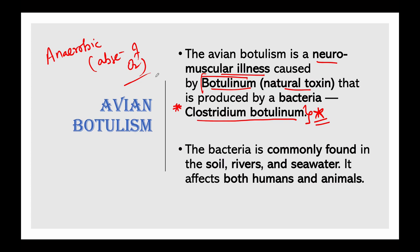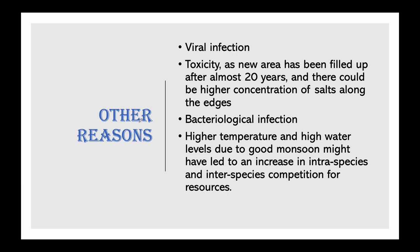This bacteria affects the nervous system of birds, leading to paralysis of their legs and wings. Outbreaks of avian botulism tend to occur when average temperatures are above 21 degrees Celsius or during droughts. The Rajasthan government, following a division bench of the Rajasthan High Court taking cognizance, listed four likely reasons: viral infection; toxicity due to higher concentration of salts; bacteriological infection; and higher temperatures combined with high water levels due to good monsoon increasing inter- and intraspecies competition.